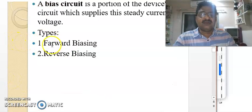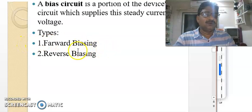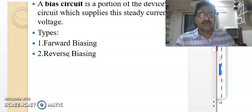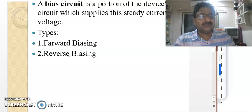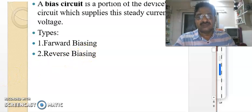There are two types of biasing of a diode in electronics: forward biasing and reverse biasing. What is forward biasing? What is reverse biasing? And how do they operate? These things we will now discuss.